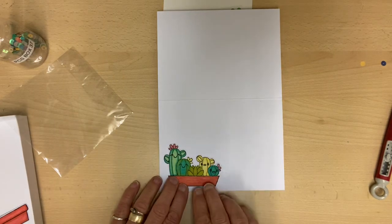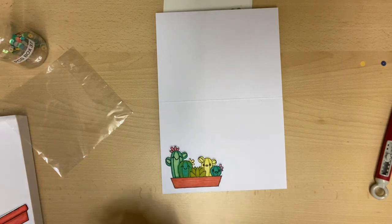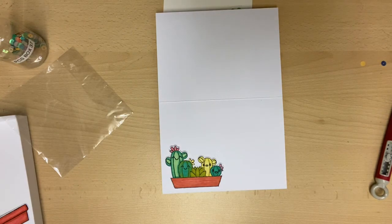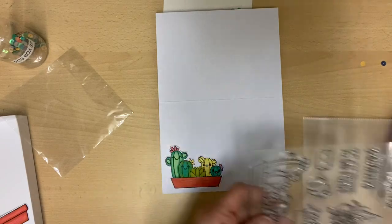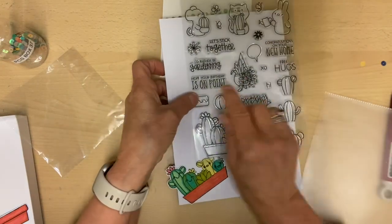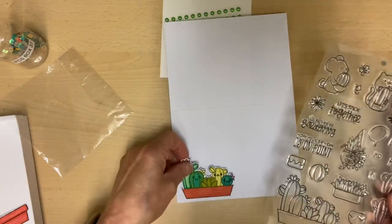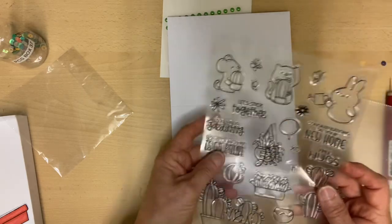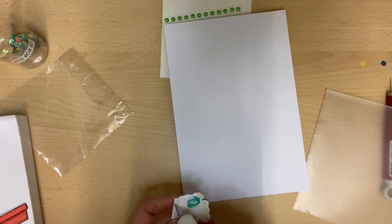And then in the middle I'm going to put that and a sentiment. And the sentiment I'm going to use is—I hope you can see it better on there—'Hope your birthday is on point.' So I'm going to get this glued down and then we'll stamp the sentiment so I can get the sentiment in the right place.